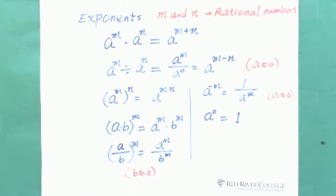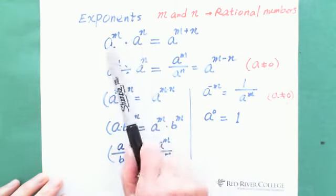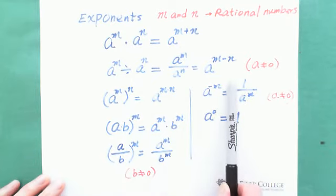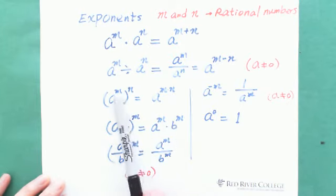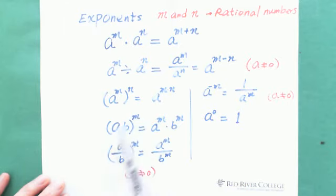The exponent laws: when you multiply two exponents with the same base, we add the exponents. If we divide, we subtract the exponents. If the exponent is raised to the power n, we multiply the exponent with that power. We can also multiply small letters that have different bases but the same exponent — we can multiply first or we can separate them.